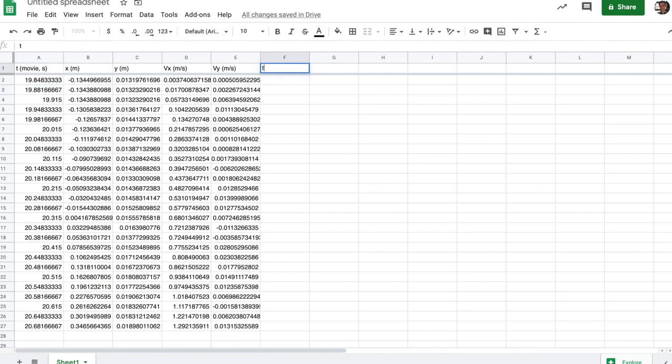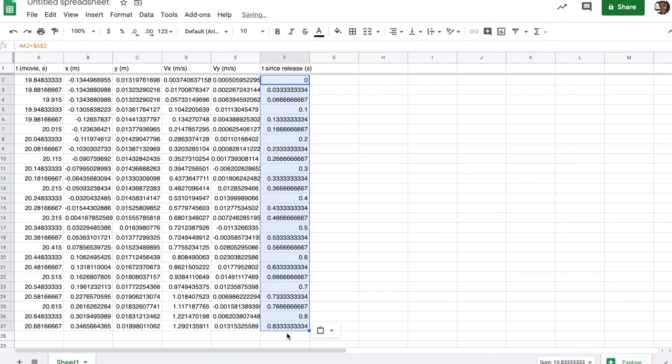And I'm going to create a time since release column. That'll be in seconds, and I'll just say that this is the time in the movie minus the first time. So I can actually anchor that by saying $a$2 in my entry, and that'll leave this fixed for when I copy and paste this on down. It'll just subtract that all off.